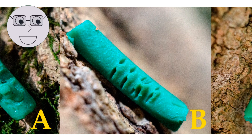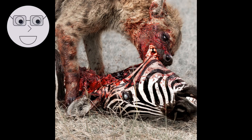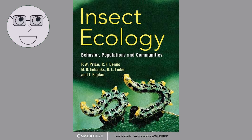Insects are also important food sources for other animals, including birds, fish, and mammals. A bird catching a butterfly, a fish eating a mosquito larva. In the next segment, we will explore the ecology of insects and their interactions with other organisms.